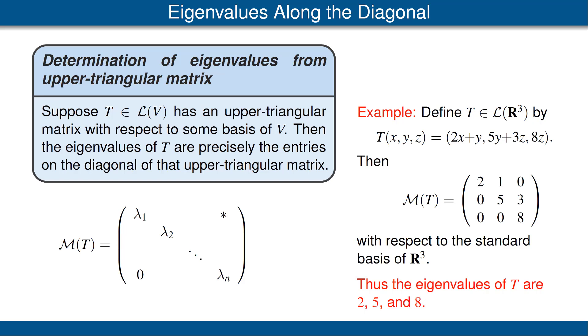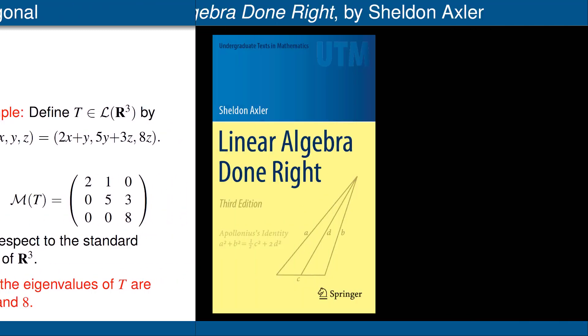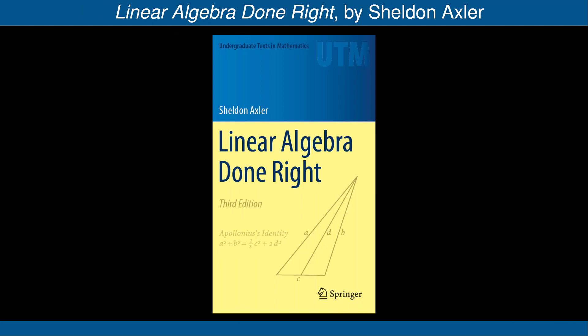From our previous theorem, we do know that if V is a complex vector space, then there is some basis with respect to which T has an upper triangular matrix. This concludes part 2 of the video on eigenvalues, eigenvectors, and invariant subspaces.